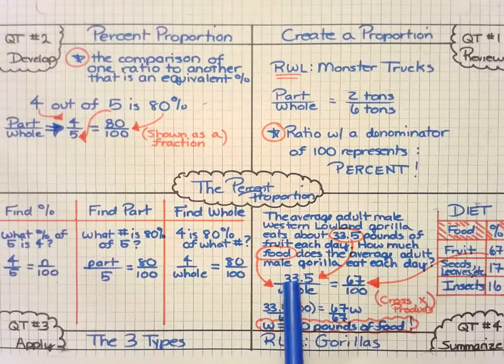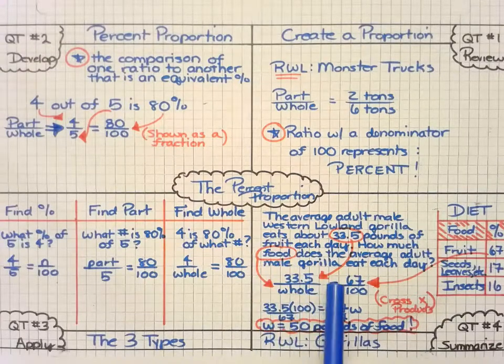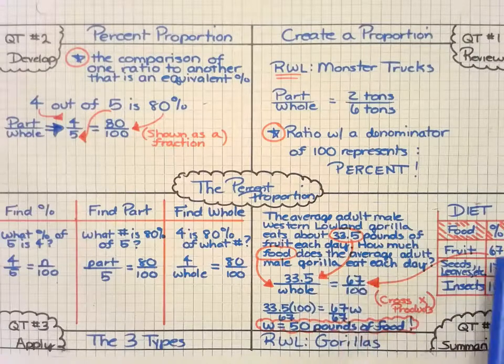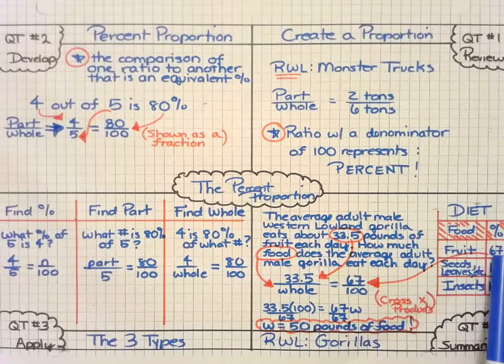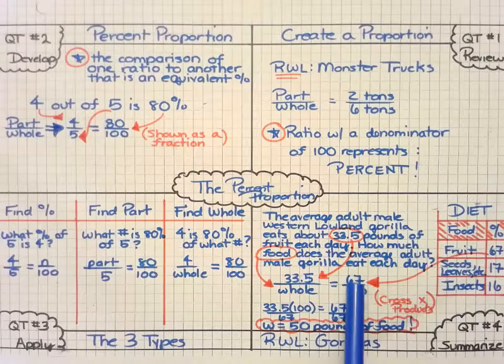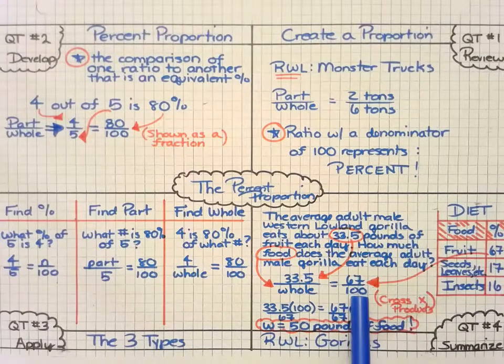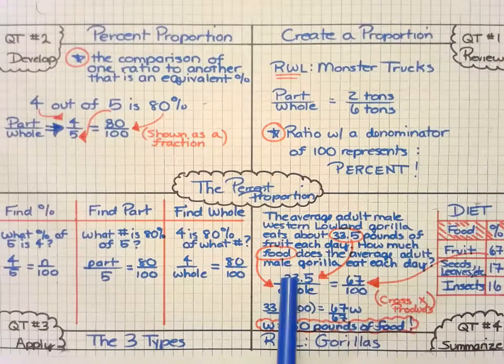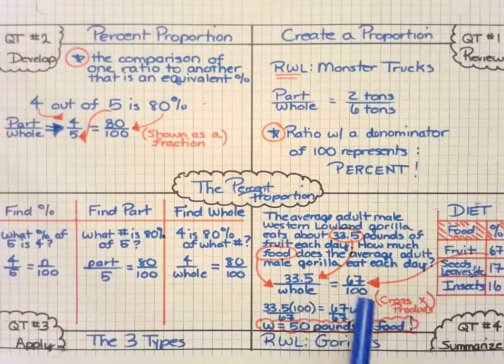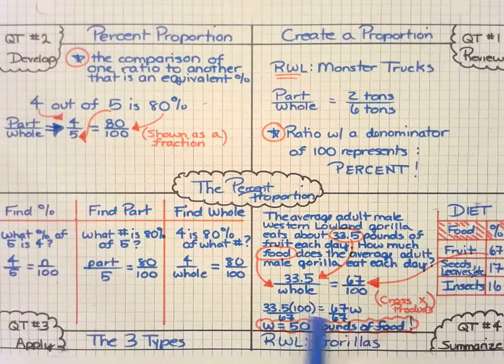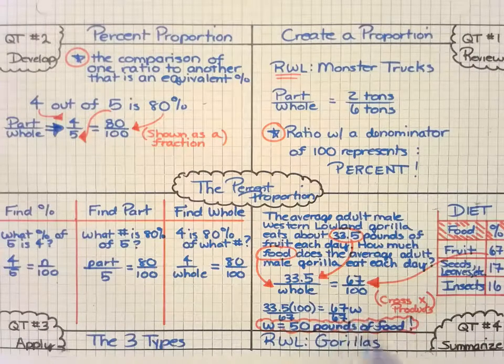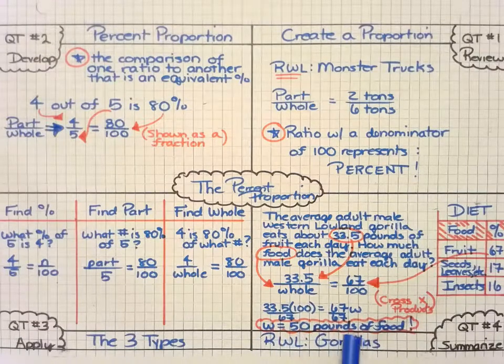And then I know that that 33.5 for the fruit is equivalent to that 67 percent given to me in the diagram and the table. And I can put that over the total of 100 percent. And then I can use the cross products that we've learned earlier this year and solve and simplify. In which case, when I solve for w, I get 50 pounds of food.